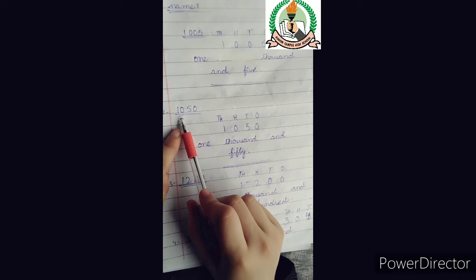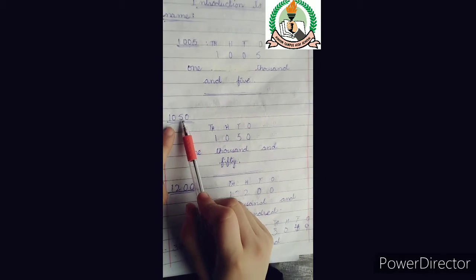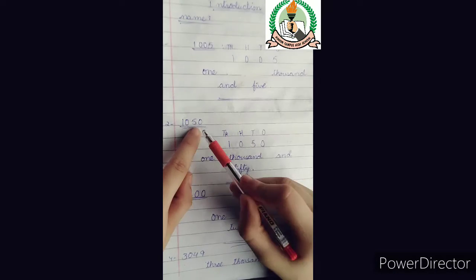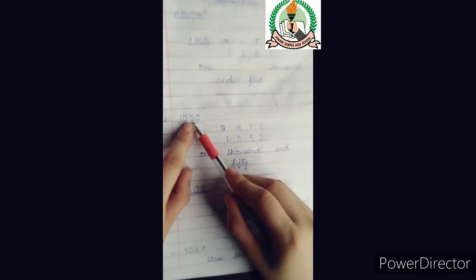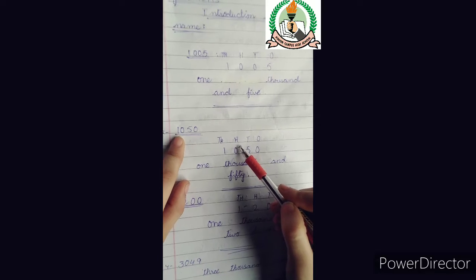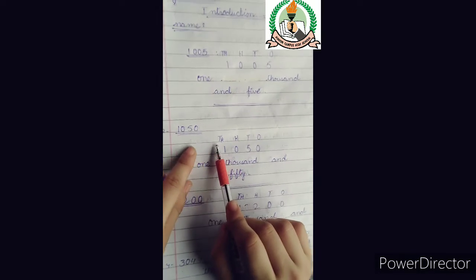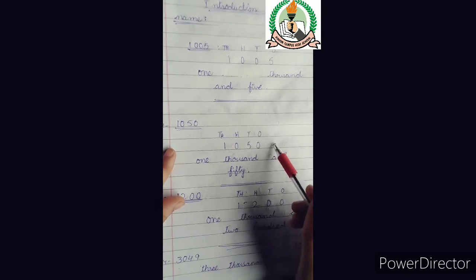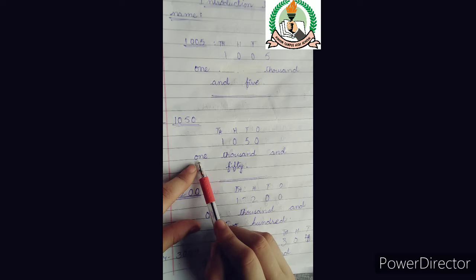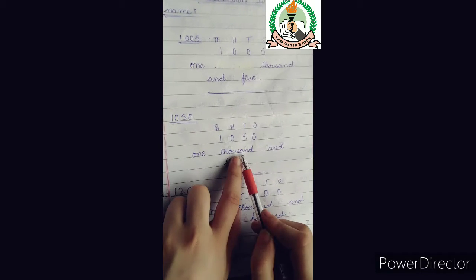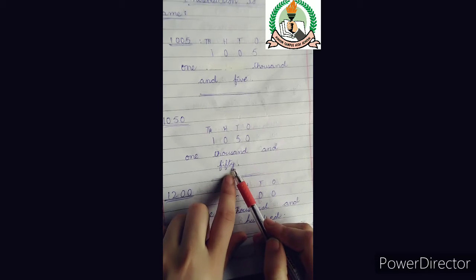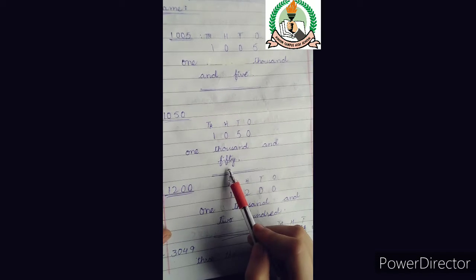Next question is 1, 0, 5, 0. Same question, same method. 0 is at the place of 1, 5 is at the place of 10, 0 is at the place of 100, and this 1 is at the place of 1000. It will become the number 1050. O-N-E, T-H-O-U-S-A-N-D, 1000 and F-I-F-T-Y, 50. 1050.